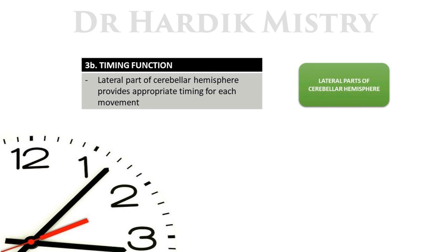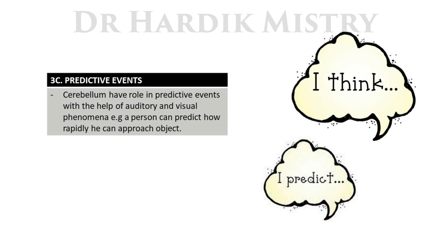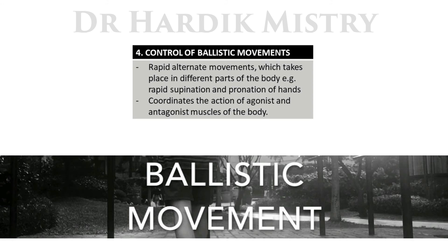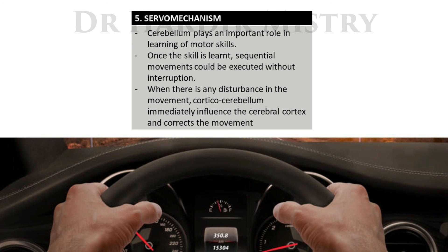The timing function of the cerebellum: the lateral part of the cerebellar hemisphere provides appropriate timing for each movement. The cerebellum also has a role in predictive events — using auditory and visual phenomena, a person can predict how rapidly they can approach an object. Regarding ballistic movements and rapid alternating movements such as rapid supination and pronation of the hands or dancing, the cerebellum coordinates agonist and antagonist muscles. Through its servomechanism function, once a motor skill is learned, sequential movements are executed without interruption; if any disturbance occurs, the corticocerebellum immediately influences the cerebral cortex to correct the movement.